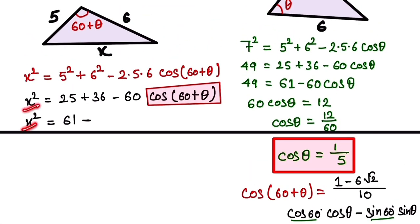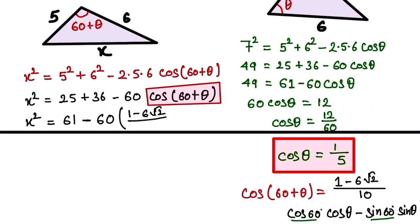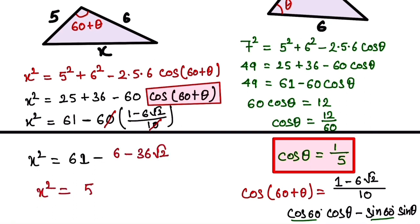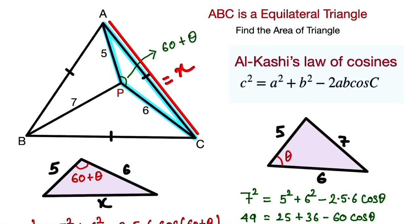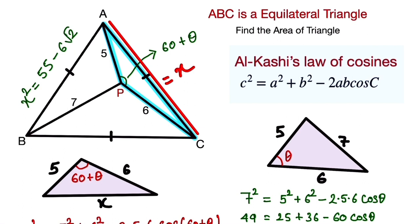Now we substitute this value into our equation: X² = 61 − 60·(1 − 6√2)/10. The 60 and 10 cancel to give 6, so X² = 61 − 6·(1 − 6√2) = 61 − 6 + 36√2. Wait — simplifying: X² = 55 + 36√2. So X² = 55 − 36√2.